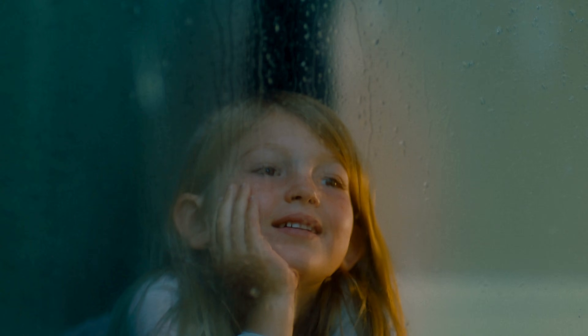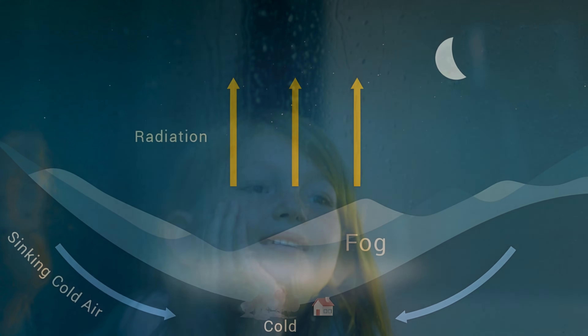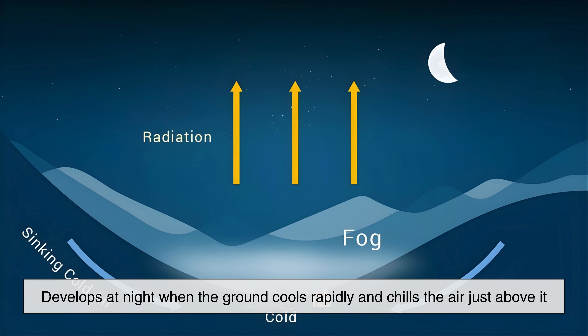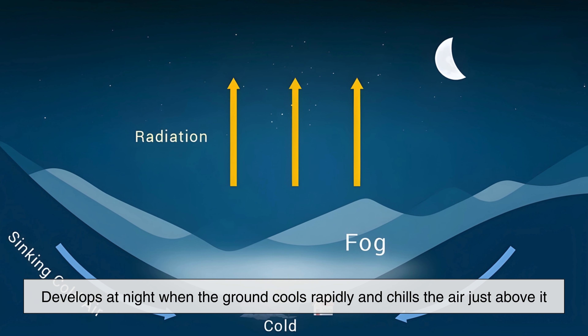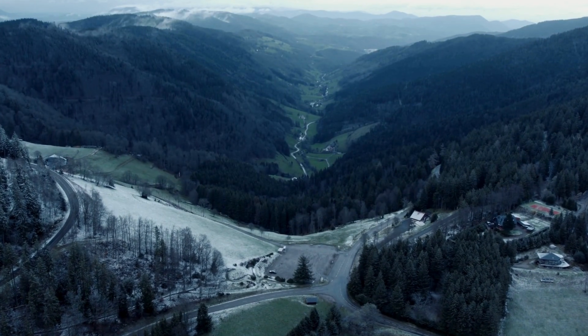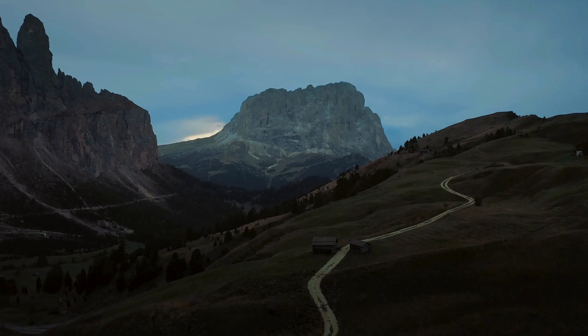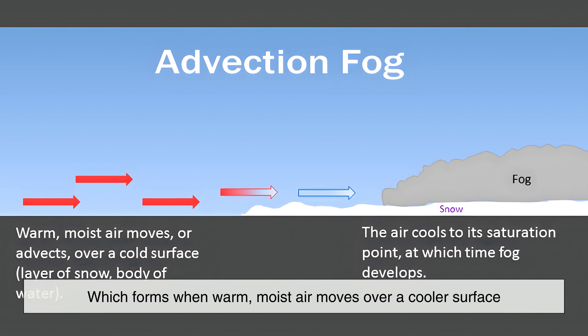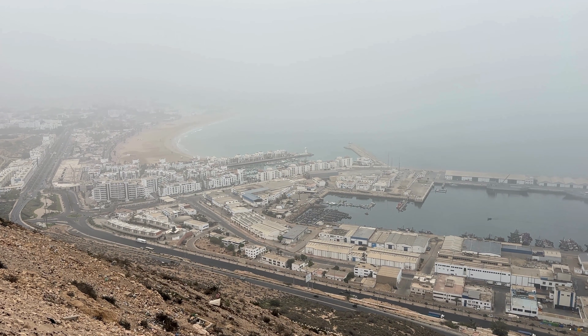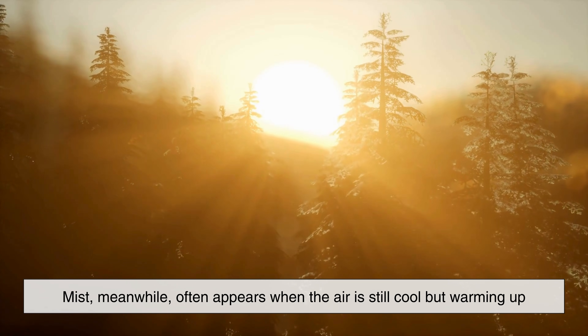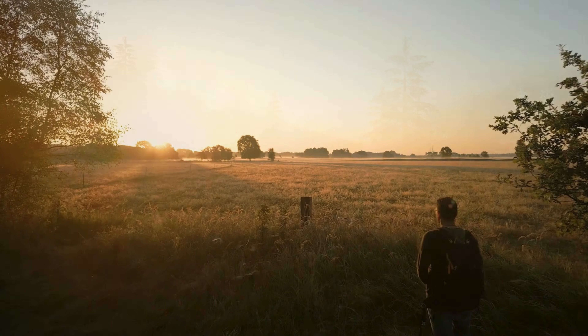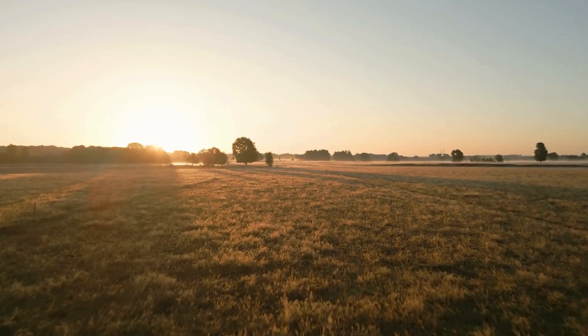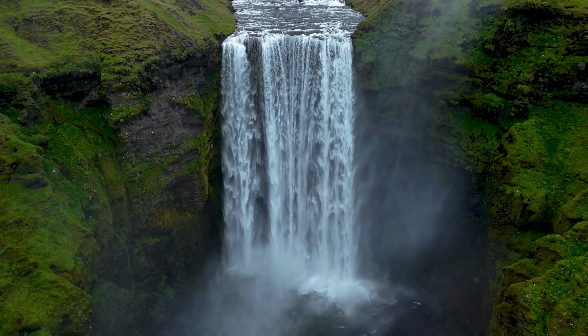Fog also tends to form under specific weather and environmental conditions. One common type is radiation fog, which develops at night when the ground cools rapidly and chills the air just above it — this type is common in valleys and open fields, especially during calm, clear nights. Another type is advection fog, which forms when warm, moist air moves over a cooler surface, something you often see near coastlines. Mist, meanwhile, often appears when the air is still cool but warming up, like in the early hours after sunrise. Mist frequently shows up near waterfalls, lakes, or after rainfall when moisture is evaporating but hasn't fully dispersed.